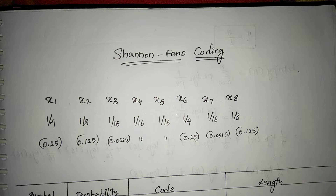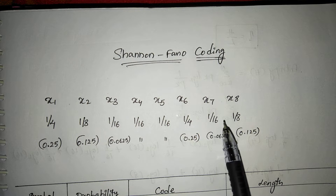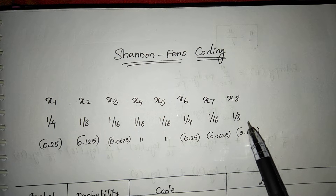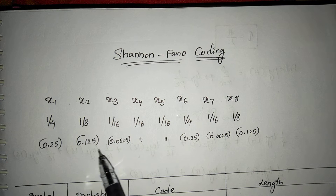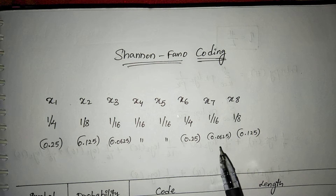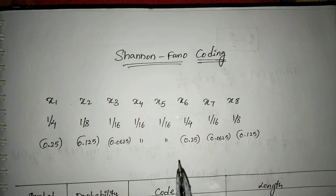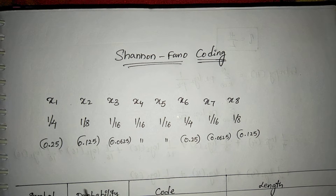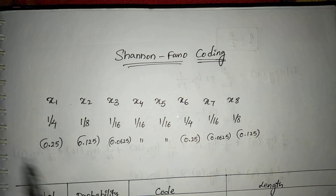Let us see this example problem step by step. The probabilities are given in fractional form — most of the time probabilities will be given as fractions. For convenience I will convert them into decimal: 1/4 is 0.25 and 1/16 is 0.0625. There is a condition that the sum of all probabilities must equal 1, so whatever question is given, you must check this condition first.